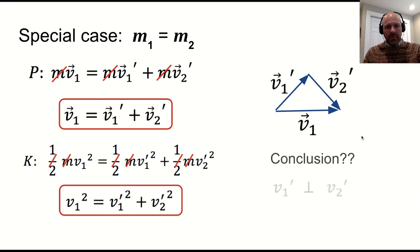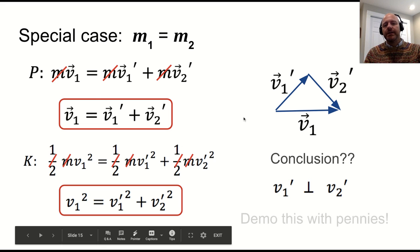What's our conclusion? Well, that v1 has to be moving perpendicular to v2. And that's actually a really interesting result and something that is useful for us thinking about 2D collisions.